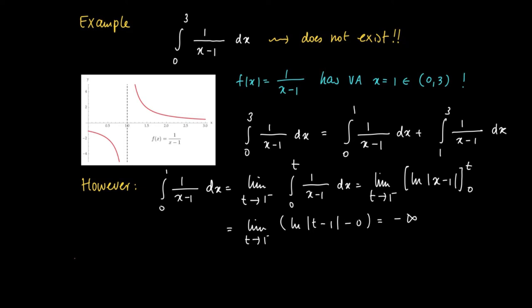So this is a divergent integral, and the integral from 0 to 3 of 1 divided by x minus 1 does not exist at all.